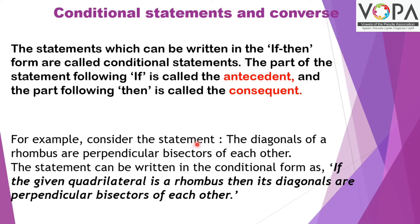For example, consider the statement: the diagonals of a rhombus are perpendicular bisectors of each other. This can be written in conditional form as: if the given quadrilateral is a rhombus, then its diagonals are perpendicular bisectors of each other. Here, 'the given quadrilateral is a rhombus' is the antecedent, and 'its diagonals are perpendicular bisectors of each other' is the consequent.